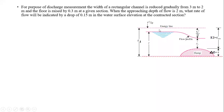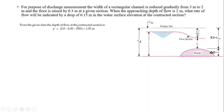For the given conditions, the flow depth at the contracted section is calculated as: the approaching depth was 2 m, minus the water surface reduction of 0.15 m, minus the floor raise of 0.3 m — giving a flow depth of 2 - 0.3 - 0.15 = 1.55 m at the contracted section.